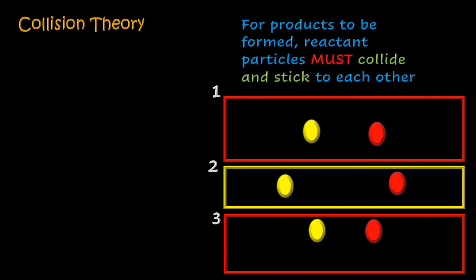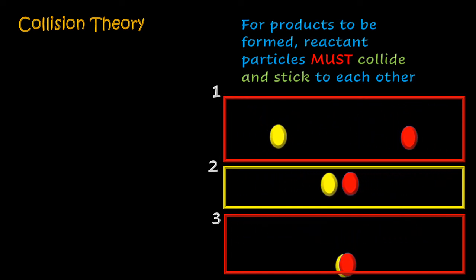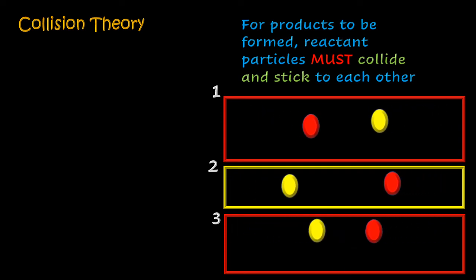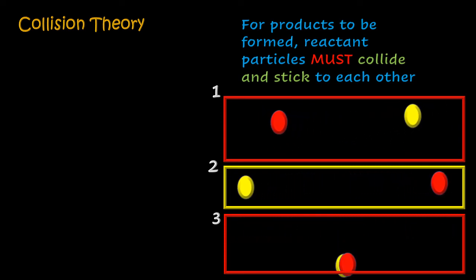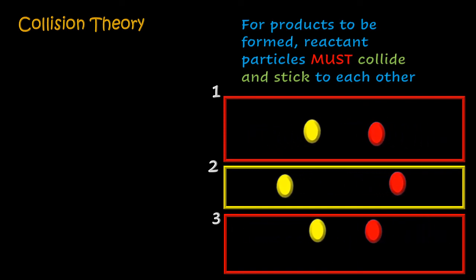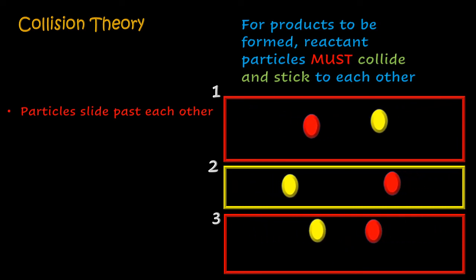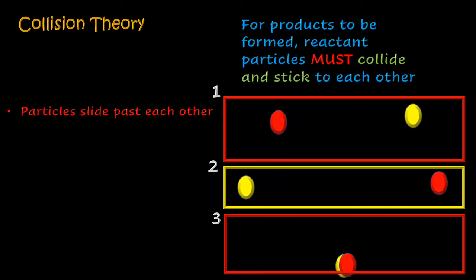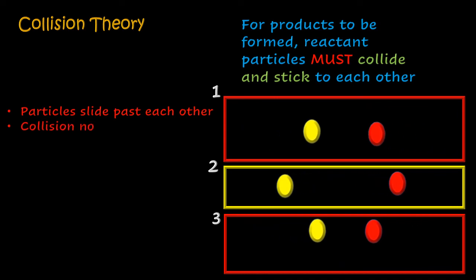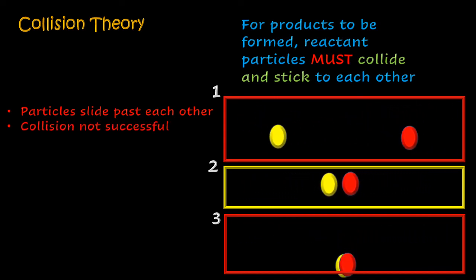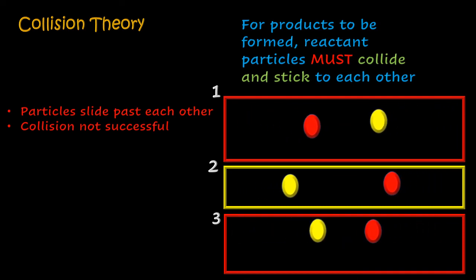Have you thought about scenarios one, two, and three? Let us look at them together. In scenario one, the particles that are supposed to react with each other simply slide past each other. Considering the collision theory, we can say that the collision was not successful because the particles did not stick to each other, and therefore no product is formed.